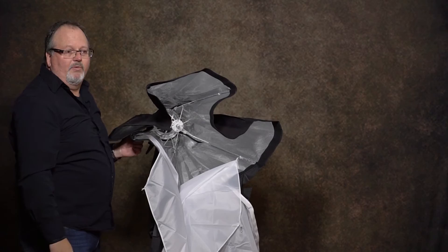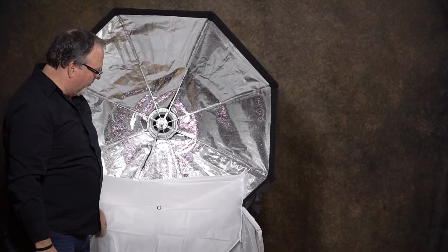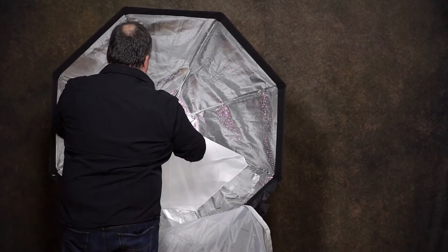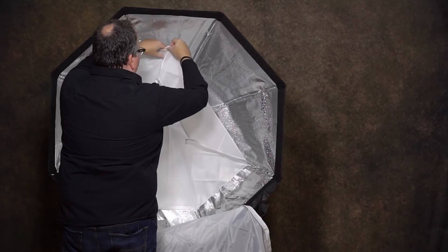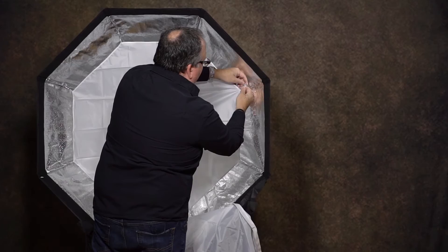To set it back up, it's a matter of spreading it back out. Taking your thumbs, press that back until it catches. Now you're ready to rock and roll. You clip in your inner diffusion panel, your baffle. Never be baffled by your baffle. You can see how quick and easy this is to set up, especially if you've been using a softbox that uses rods. Oh my gosh. Talk about a pain in the butt. Done.